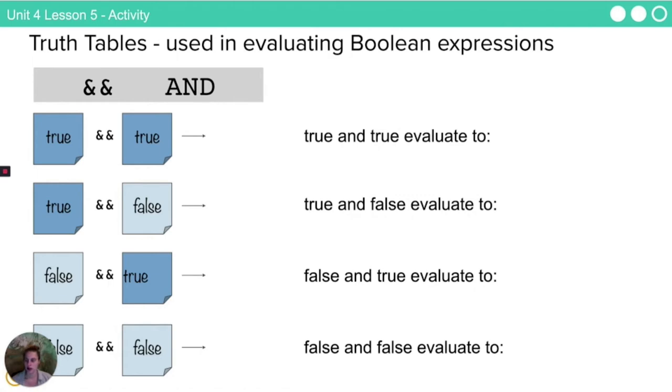Used in evaluating Boolean expressions, this is an and truth table. I have true and true and I want to think about if I have something that is true and something else that is true, what does the whole statement evaluate to? So for example, if you look down in the little picture, you'll see I am holding up my right hand and I am holding up my left hand. That whole statement is true, and so the whole thing evaluates to true.